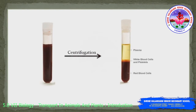When a sample of human blood is taken in a test tube and rotated at a high speed in a centrifuge, the blood separates into its components: a straw-colored liquid called plasma, a thin white layer which constitutes the white blood cells and the platelets, and a dark brown mass of cells called red blood cells. Thus, there are three types of blood cells: red blood cells, white blood cells, and platelets.